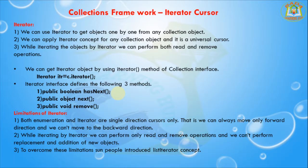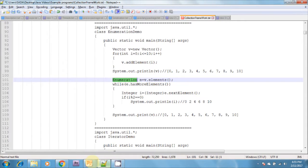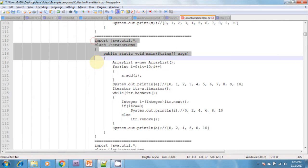While iterating with Iterator, we can perform both read and remove operations. We can get the Iterator object by using the iterator() method of the Collection interface. Calling the iterator() method returns a reference of the Iterator interface. The Iterator interface defines three methods: hasNext() — returns boolean, next() — returns the element, and remove() — removes the element from the collection object.